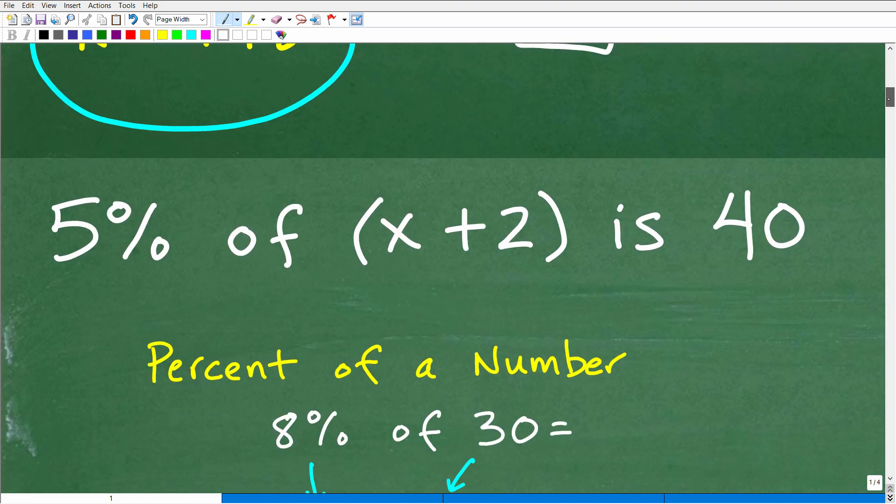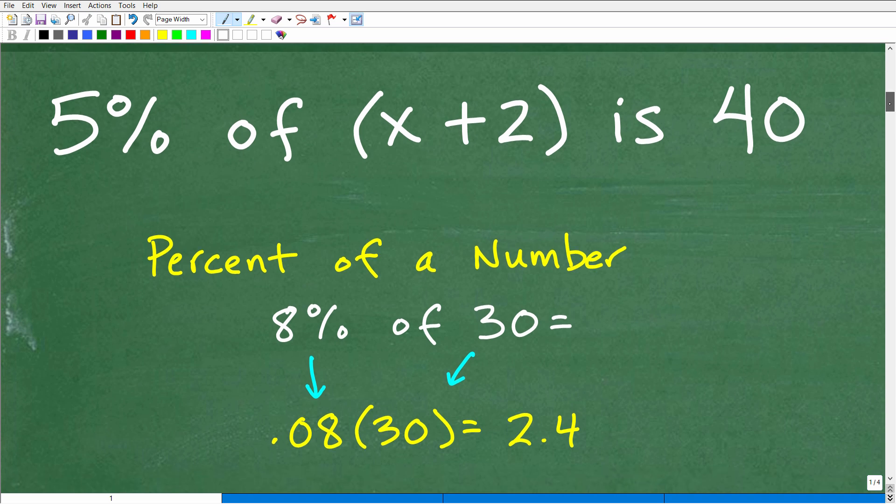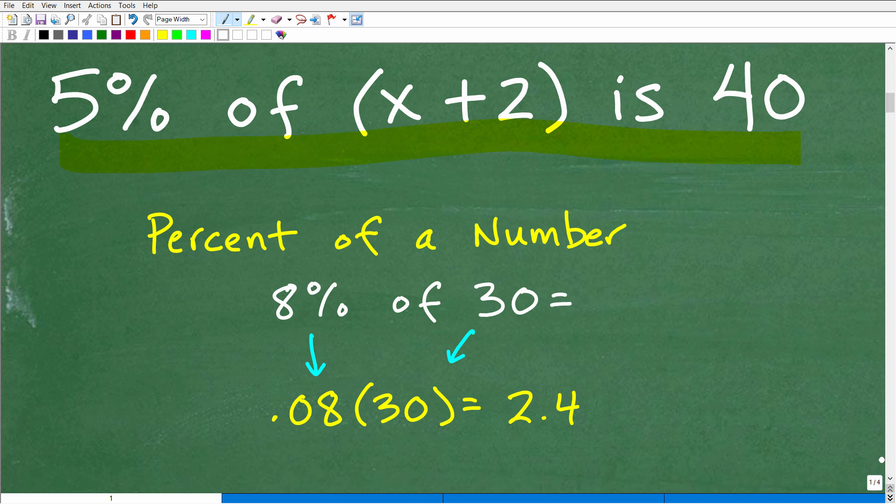Okay, so let's get into this problem. 5% of x plus 2 is 40. Well, what does this problem even mean? Like, what is x? What does it mean? Well, anytime you might be confused about a problem, it's always good to look at a simpler version of that problem. So let's back up here for a second and talk about the percent of a number. So we have 5% of something is 40. Well, let's look at this situation. Percent of a number, 8% of 30.